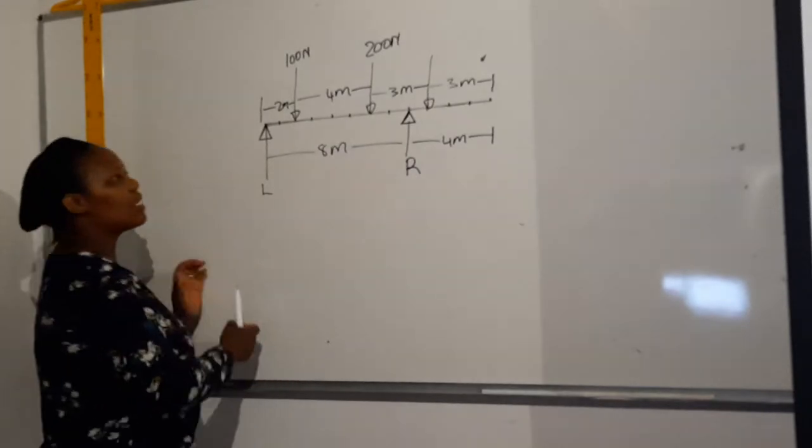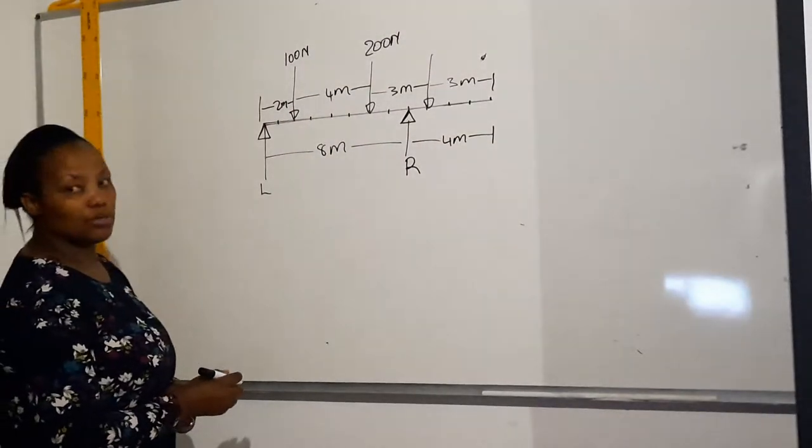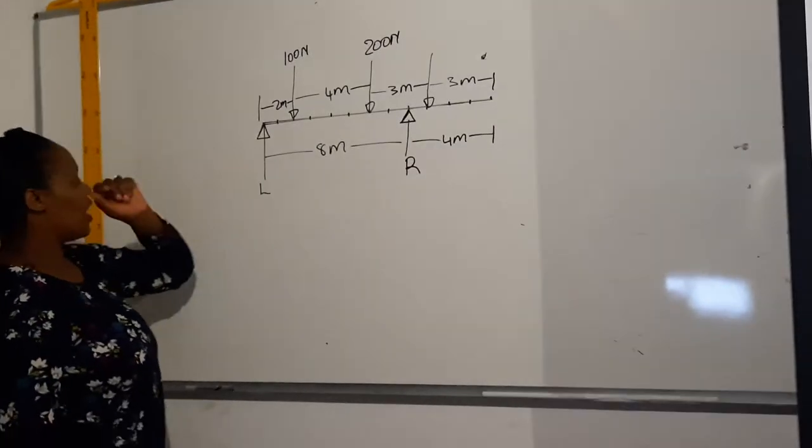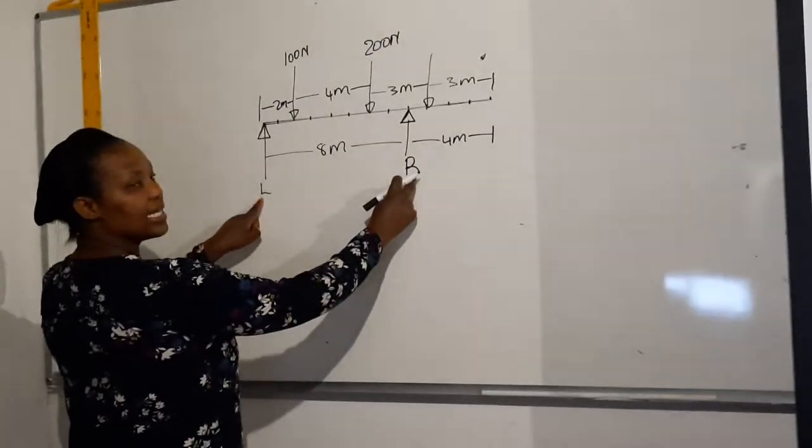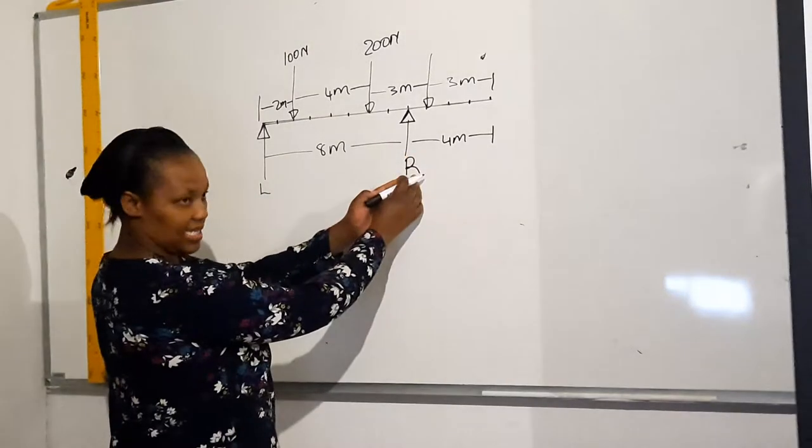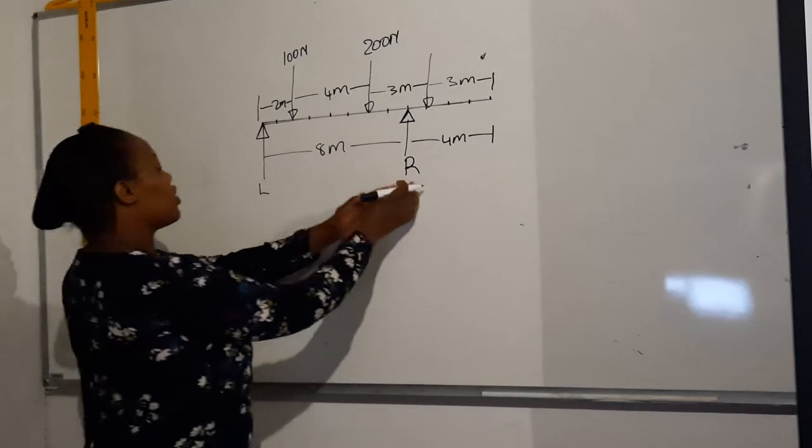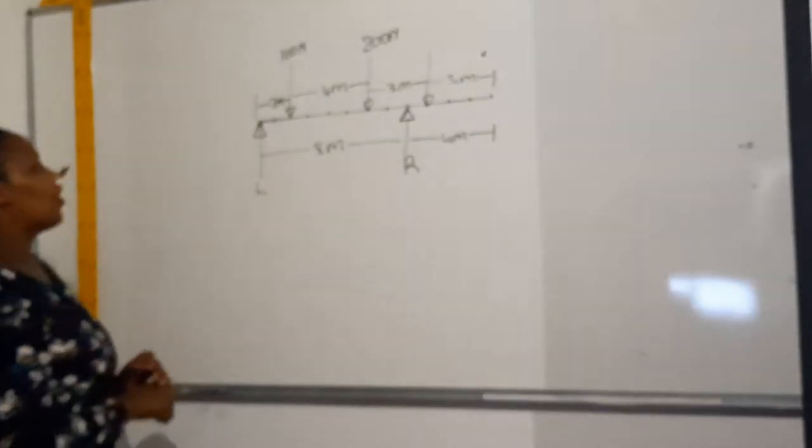Then to take moments to calculate these reactions, if you are going to calculate L you assume that only R is the pivot or the turning point. It's attached at R. So if you're going to calculate R, you assume that L is the pivot.